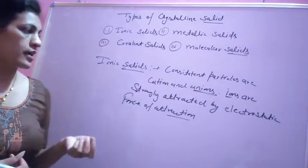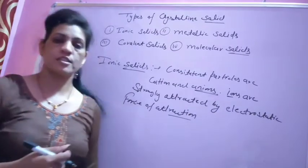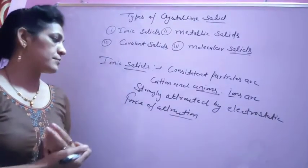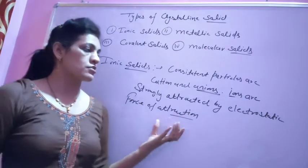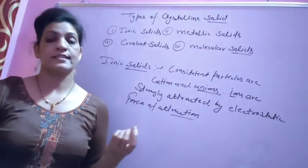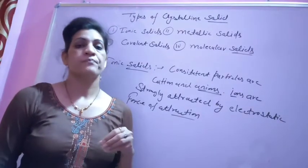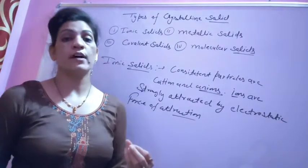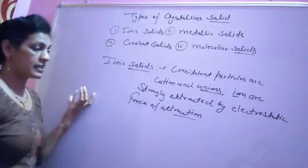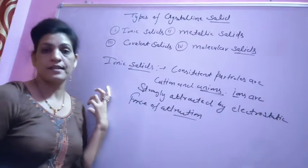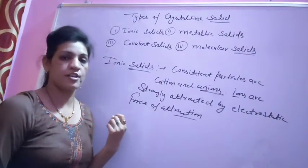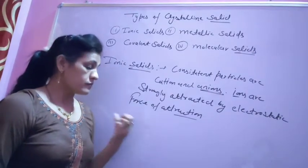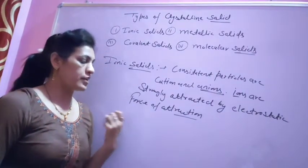The constituent particles — cations and anions — interact via electrostatic force of attraction. Because of this strong force of attraction, ionic solids are very hard and have high melting and boiling points. The strong electrostatic force between cations and anions is the reason for the high melting and boiling points.